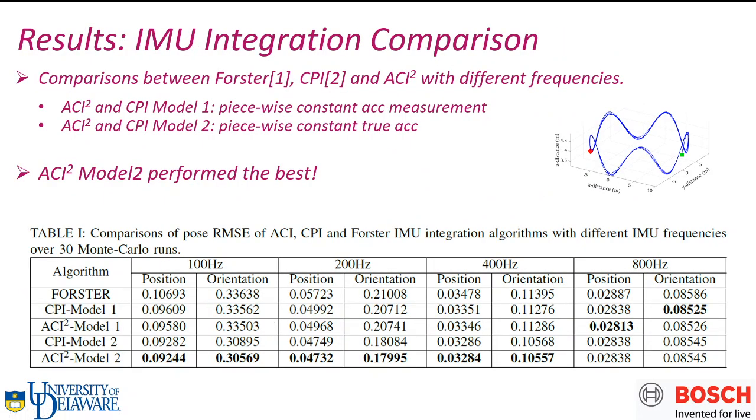We evaluate our proposed ACI². In simulations, we compare with Forster's, CPI, and ACI² with different IMU frequencies. We want to mention that we implemented two models. Model 1 represents piecewise constant acceleration measurements. Model 2 represents piecewise constant true acceleration. From the table, we can see that although all those integrators perform similarly, ACI² model 2 performs the best.